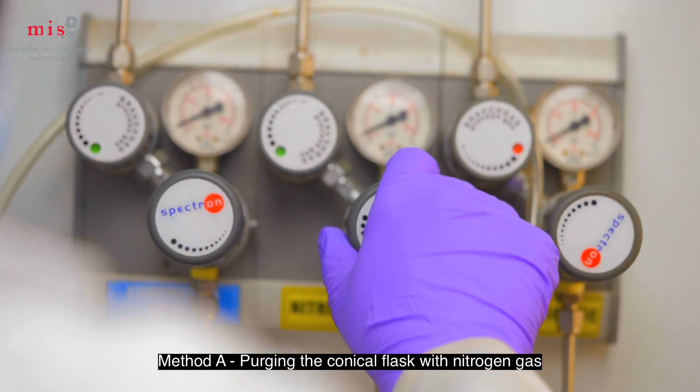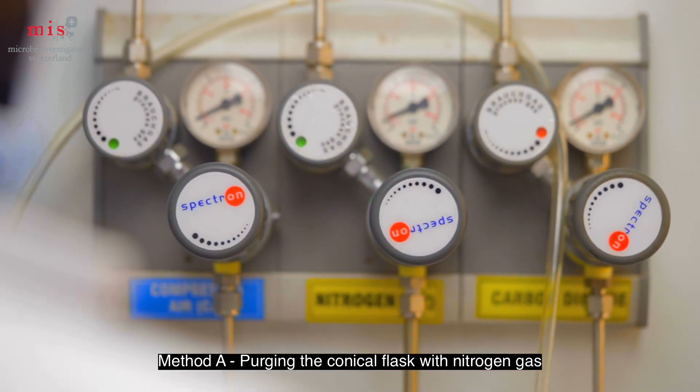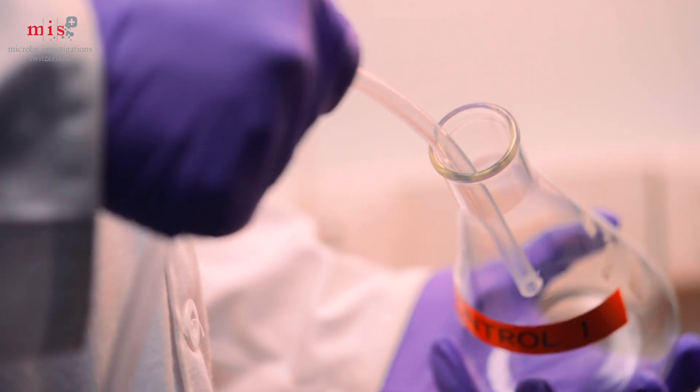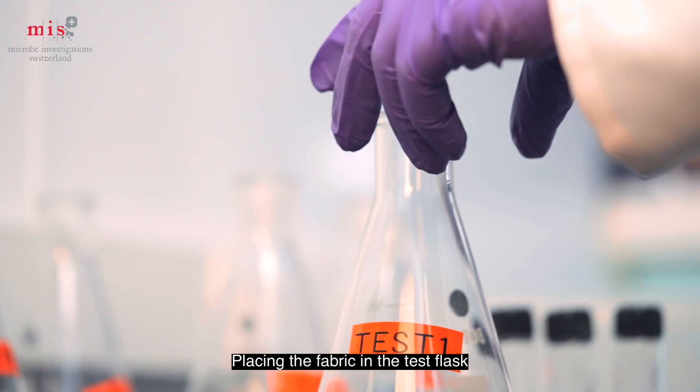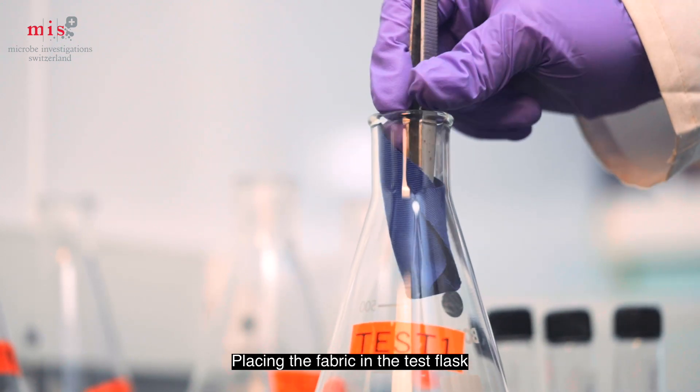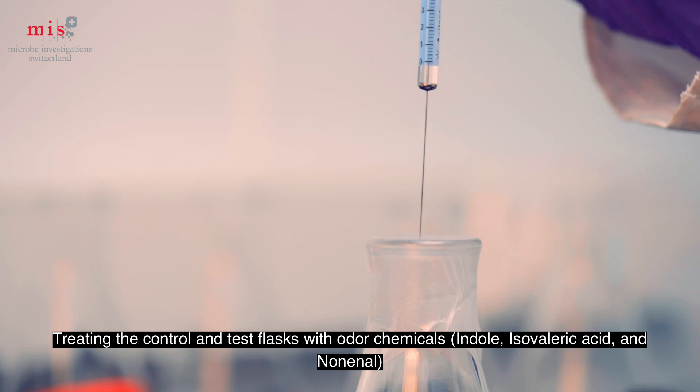Method A starts with purging the air of a conical flask by blowing nitrogen gas. After purging, test specimens are placed into the conical flask which is then sealed with a film. The next step involves injection of odor chemicals through the sealing film at the bottom edge of the flask.